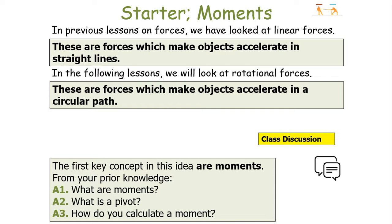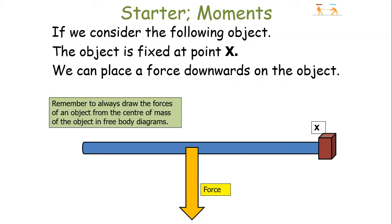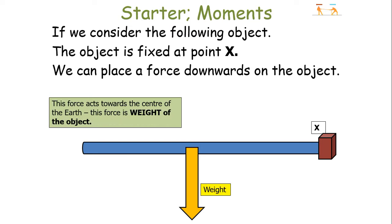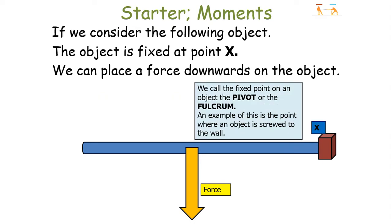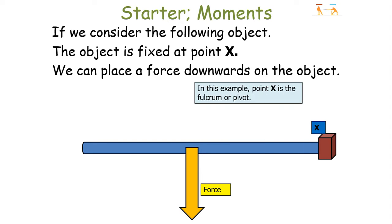What do we mean by moments? How does it link into something called a pivot? If we consider a bar which is fixed at a point x, we can place a force downwards on the object. Remember, you always draw your forces from the centre of mass in a free body diagram. This particular force acts towards the centre of the Earth — it's the weight of the object, the force acting on an object due to gravity. We can call a fixed point on an object where it cannot move the pivot or fulcrum. An example would be where an object is screwed into a wall, and in this example point x is the fulcrum.